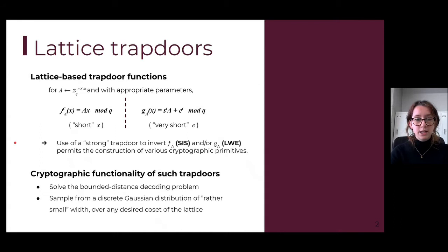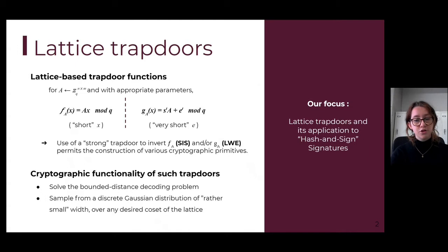For example, using a trapdoor you can solve the bounded distance decoding problem, or you can sample from a discrete Gaussian distribution over any desired coset of the lattice. This kind of cryptographic functionality is what interested us in this work, and especially its application to hash-and-sign signatures.